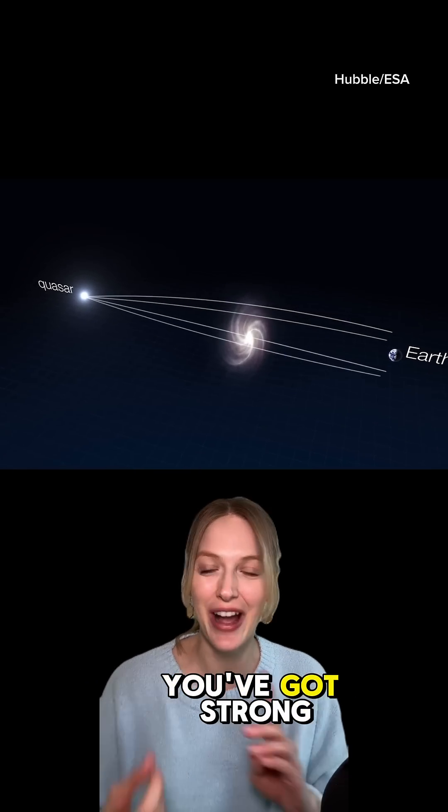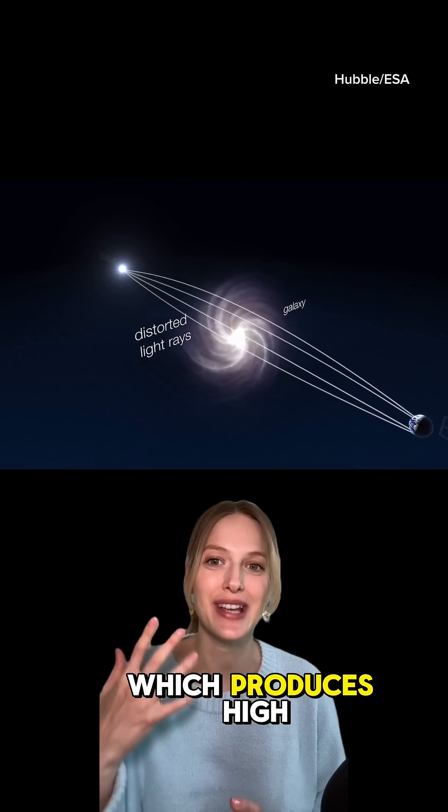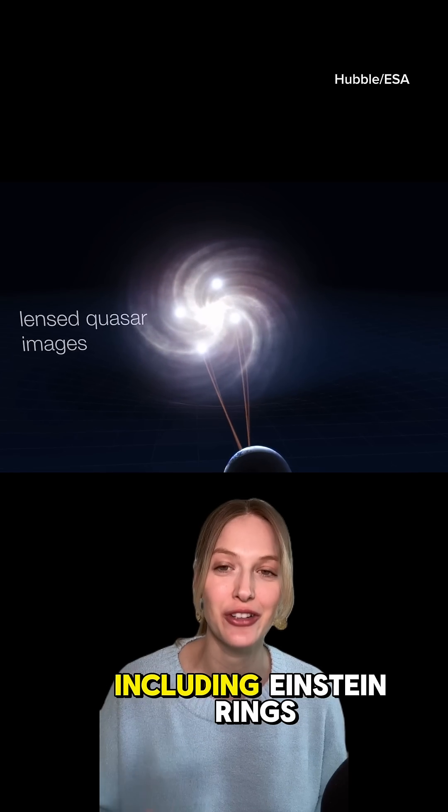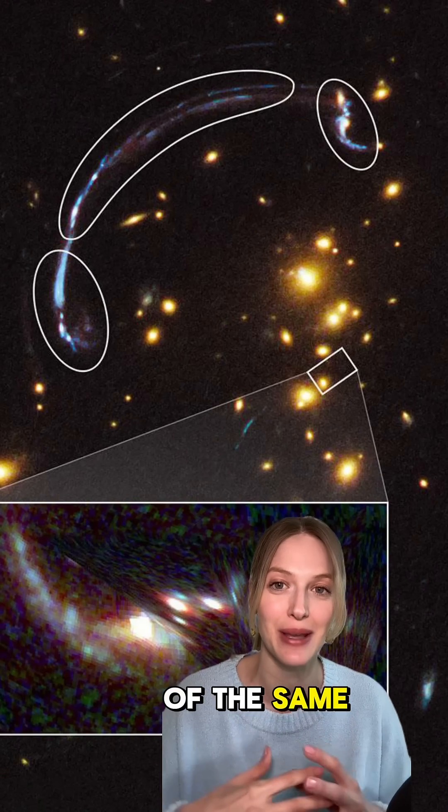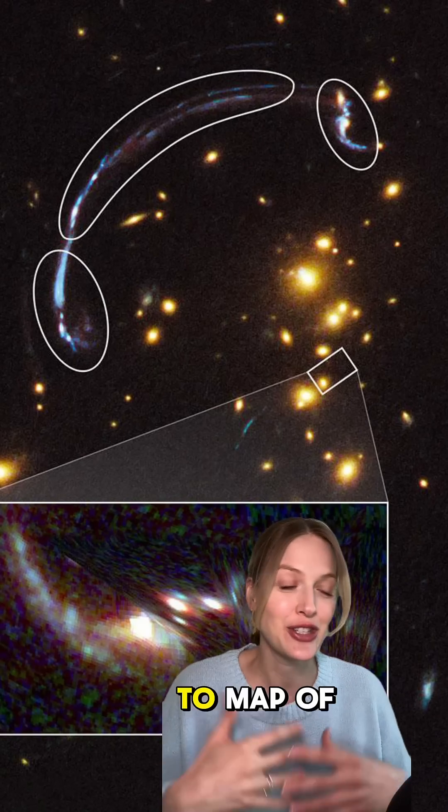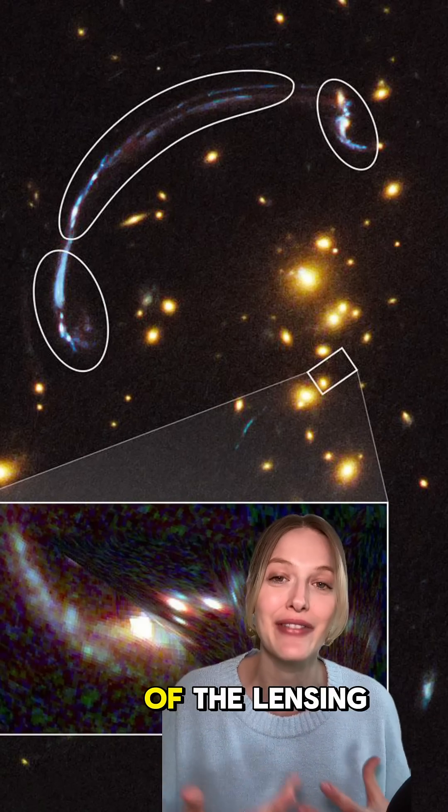Here are the different types of gravitational lensing. You've got strong lensing, which produces highly visible distortions, including Einstein rings and multiple images of the same source, allowing astronomers to map the mass distribution of the lensing object.